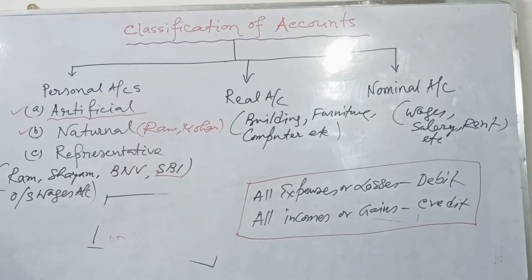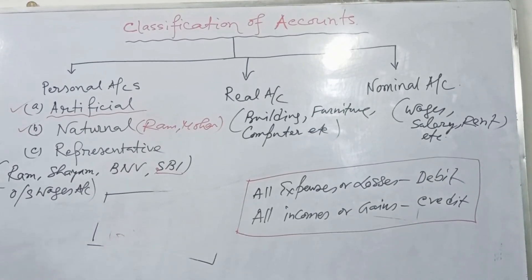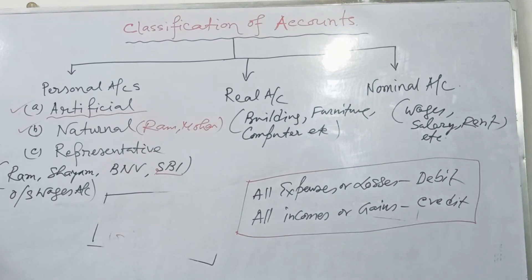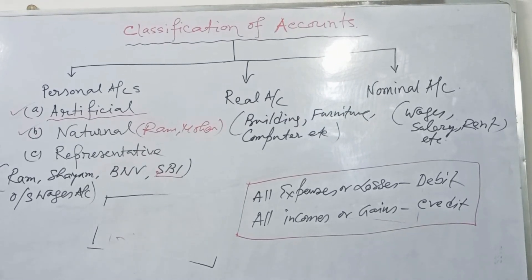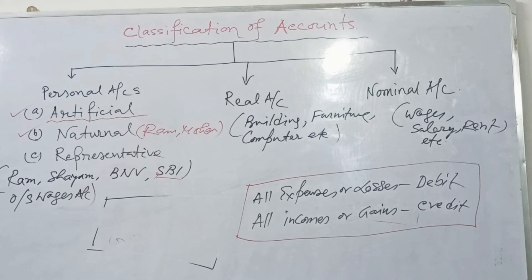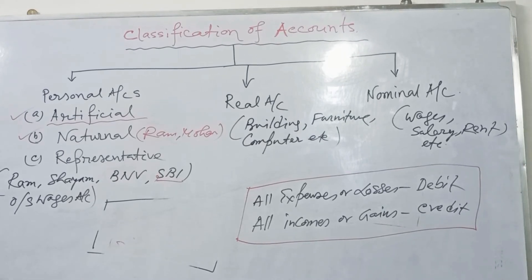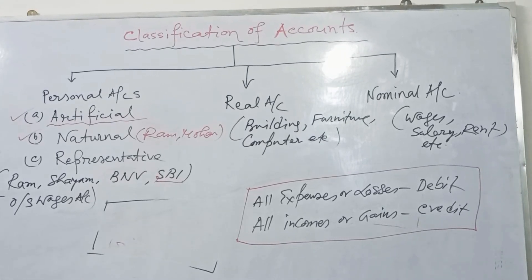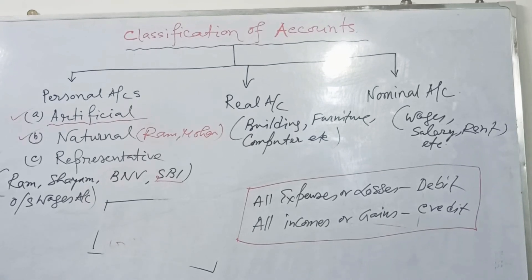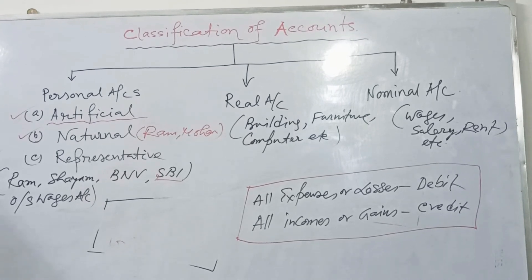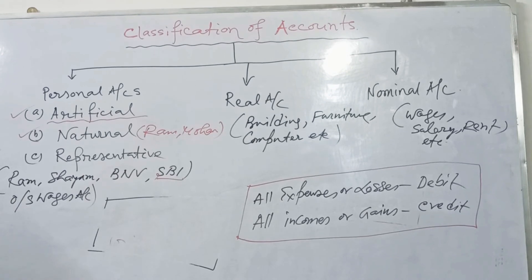To recap: classifications of accounts may be divided into three — real account, personal account, and nominal account. Golden rules of personal account: receiver is debited, giver is credited. Real account: what comes in is debited, what goes out is credited. Nominal account: all expenses and losses are debited, all income and gains are credited.